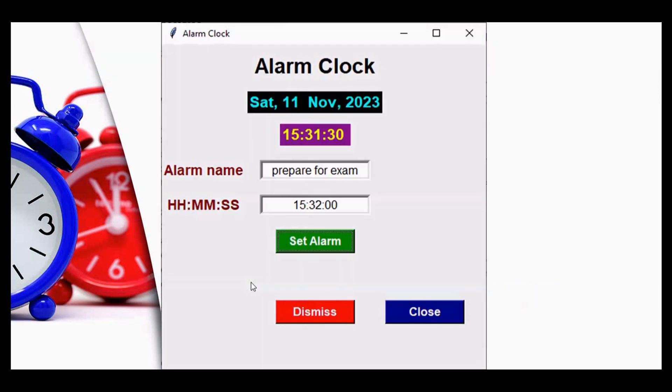This will be the final output. We have a title Alarm Clock, and then current date. We also have the current time, alarm name, alarm time with entry widgets. We can give an alarm name and we can enter the alarm time here.